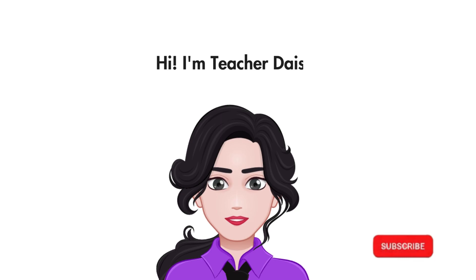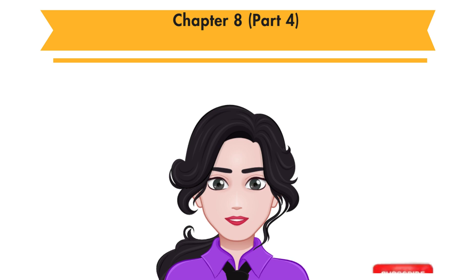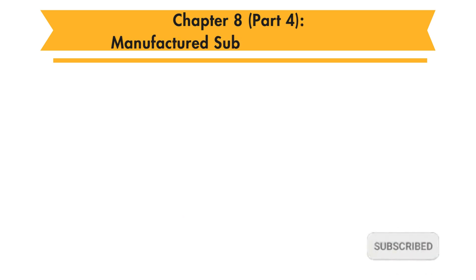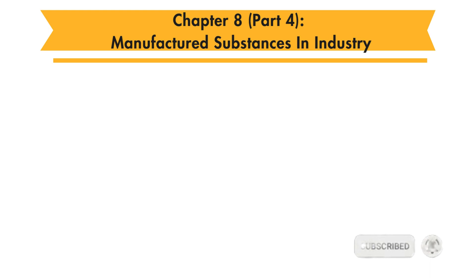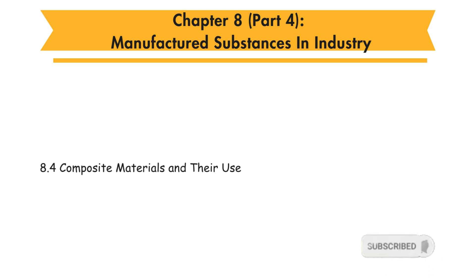Hi, I am Teacher Daisy. Now let's learn Form 4 Chemistry Chapter 8 Part 4, Manufactured Substances in Industry. In this chapter, you will learn 8.4 Composite Materials and Their Uses.